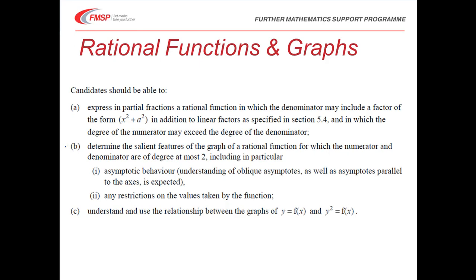In Part B we've got to determine the salient features of the graph of a rational function for which the numerator and denominator are of degree at most two, including the behaviour of asymptotes — oblique asymptotes as well as those parallel to the x and y axes. We also need to understand restrictions on values taken by the function. Part C covers the relationship between the graphs of y = f(x) and y² = f(x).